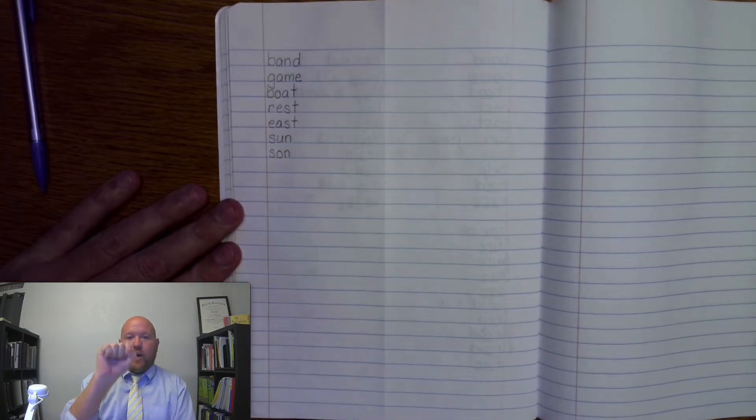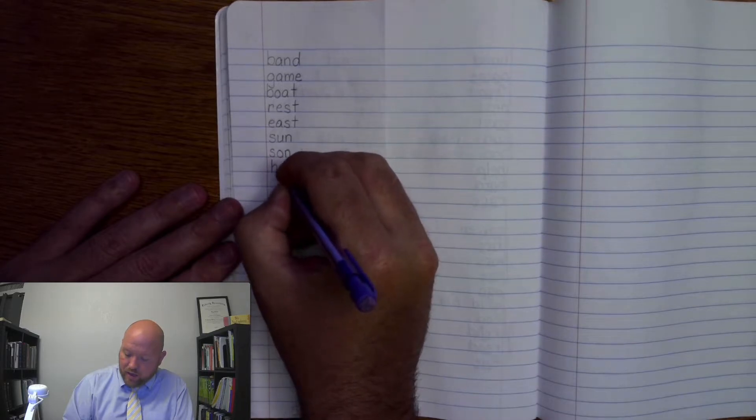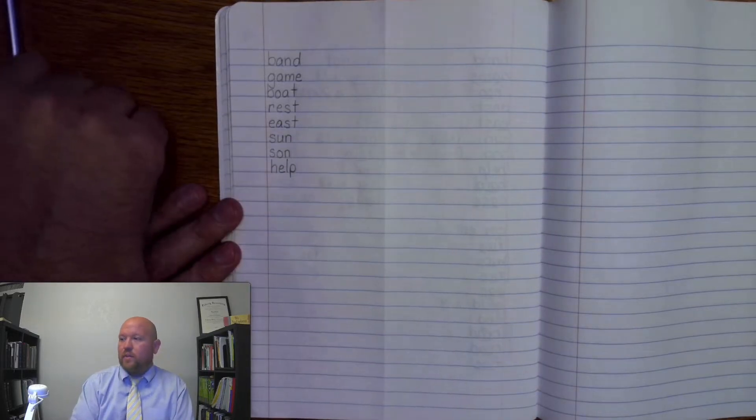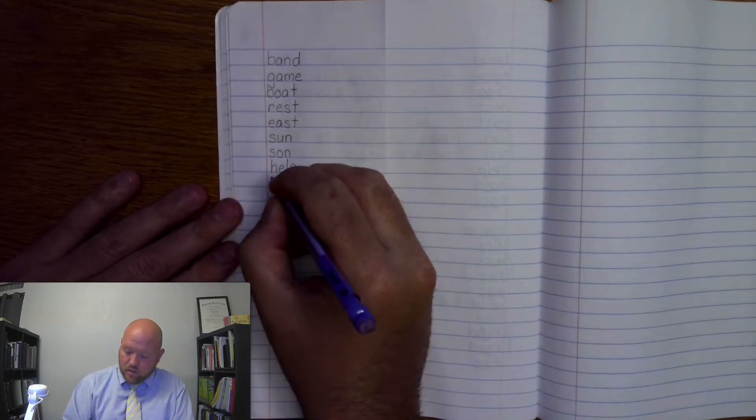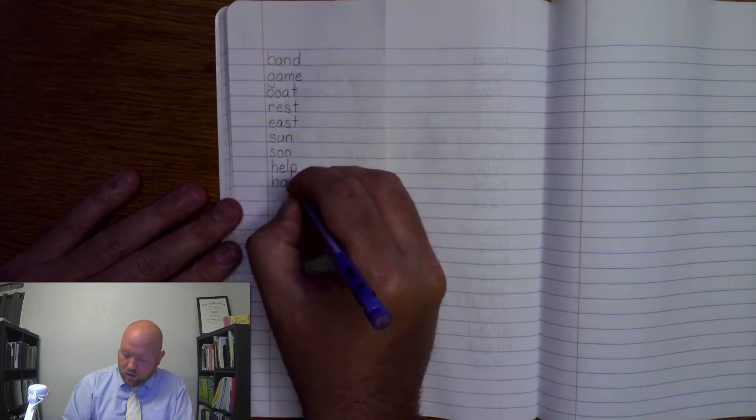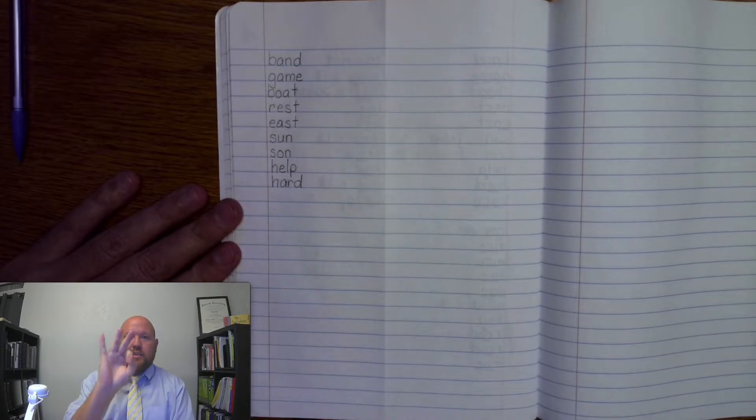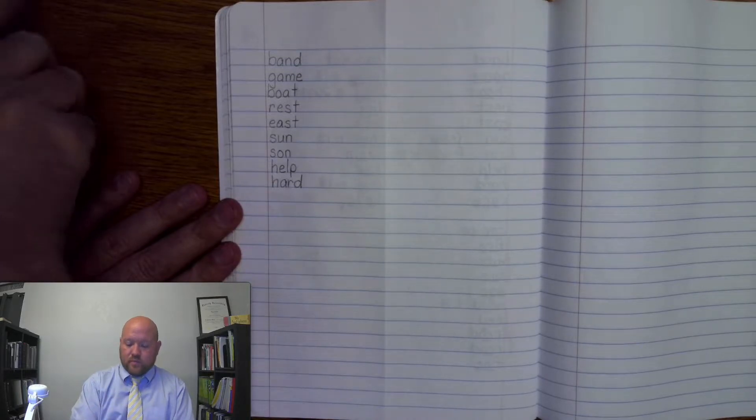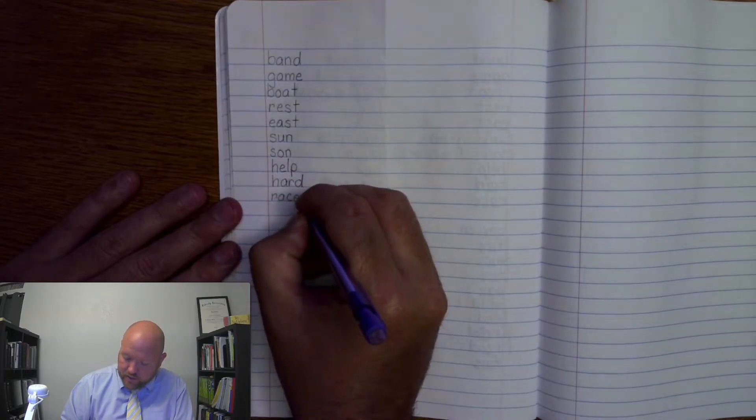Next word is help. Help me. H-E-L-P. Help. Write it. H-E-L-P. Help. The next word is hard. H-A-R-D. Hard. H-A-R-D. Hard. The next word is race. R-A-C-E. Race. R-A-C-E. Race.